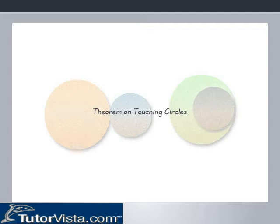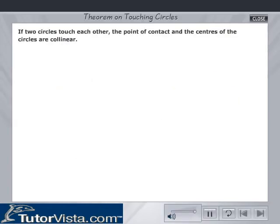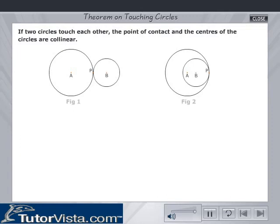Theorem on touching circles. Statement of the theorem: If two circles touch each other, the point of contact and the centres of the circles are collinear.